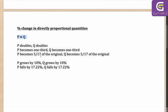If P becomes 5/17 of the original, Q also becomes 5/17 of the original. Not a very difficult one to solve. In this case, if there is a percentage change — that is, if P grows by 10%, Q will also grow by 10%.